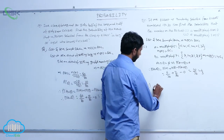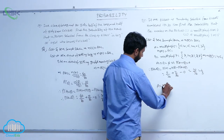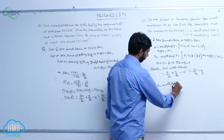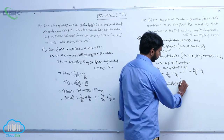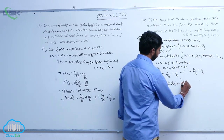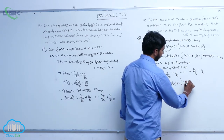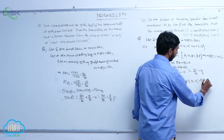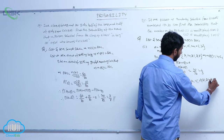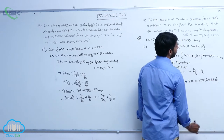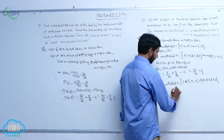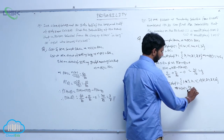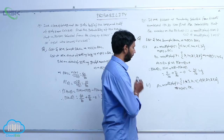Next, A is equal to multiples of 3: {3, 6, 9, 12, 15, 18, 21, 24, 27, 30}. It implies N of A is equal to 10 C1.